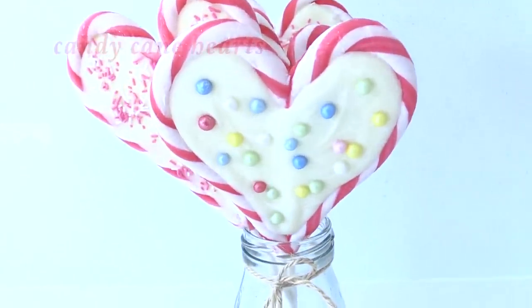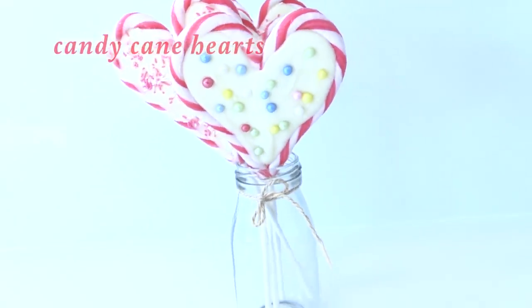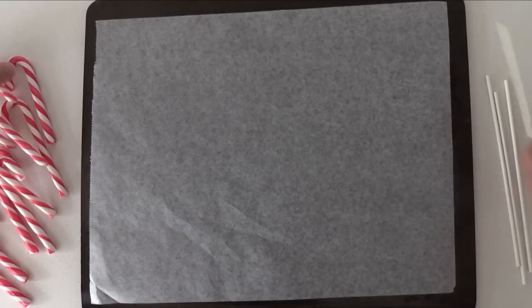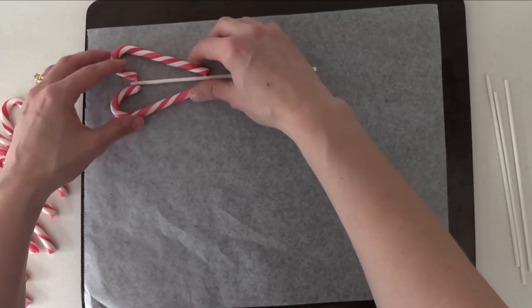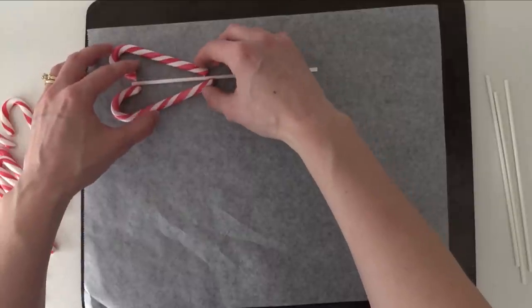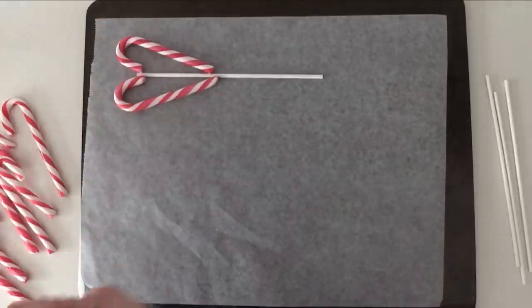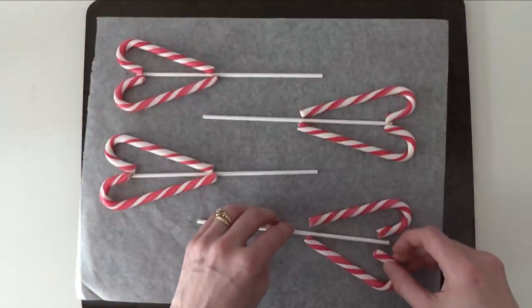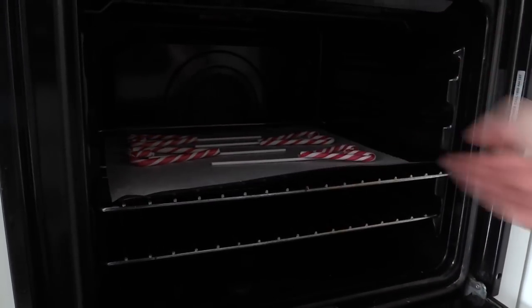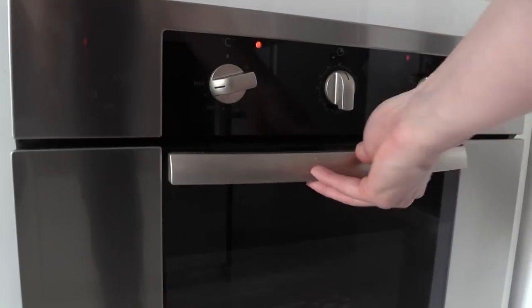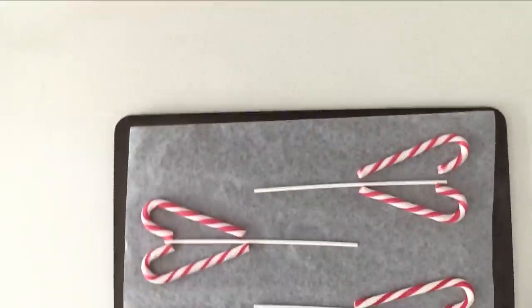Next super easy again we have candy cane hearts. What you need to do is take two candy canes of equal size and place them next to each other on a lined baking tray. And then get a cake pop stick, you need a paper one not a plastic one and put that down the middle. And then place them in a hot oven for just a few moments like about 10-20 seconds. If you leave them there too long they are going to turn into liquid so keep an eye on them.